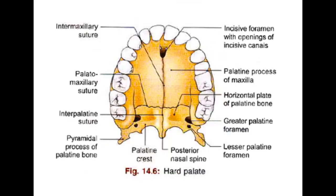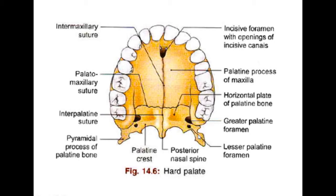This is the hard palate — it represents the anterior two-thirds. This image is taken from the inferior aspect of the hard palate, showing the alveolar arch with the teeth. The hard palate is mainly made up of two bones: number one, the palatine process of maxilla, and number two, the horizontal plate of the palatine bone. The lateral margins are continuous with the alveolar arches and the gum. The posterior margin gives attachment to the soft palate. Superiorly it forms the floor of the nose and inferiorly it is related to the roof of the oral cavity.